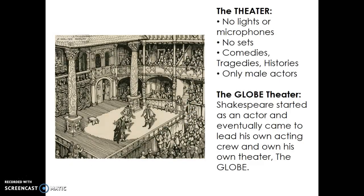Back to the theater — the theater had no lights or microphones, and no sets. In the theater there were plays such as comedies, tragedies, and histories — that's what Shakespeare primarily put out. There were only male actors, which a lot of people are shocked to hear. It was considered a male profession, and for women to do it would be a vulgar thing. The Globe Theater — this is actually an image of the Globe Theater from the inside, an artistic depiction. Shakespeare started as an actor and eventually came to lead his own acting crew and his own theater at the Globe, which is still around today despite being destroyed a couple of times by fire.